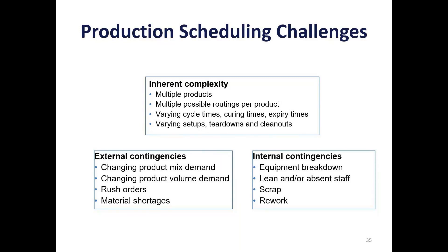And then there are the internal contingencies — the things we wish we could control but can't. Occasionally equipment breaks down. Occasionally staff is absent or has been leaned out. There is scrap that can occur during the production process, and often there is rework. All of these mitigate against the ability to simply create a production schedule on a whiteboard or a spreadsheet.